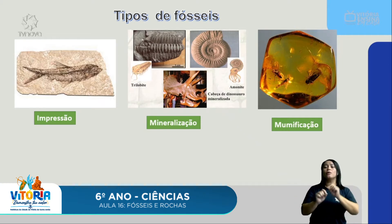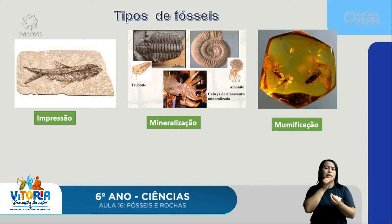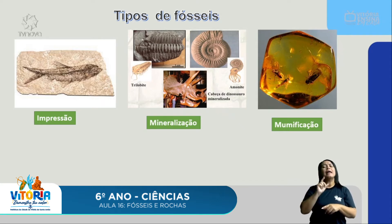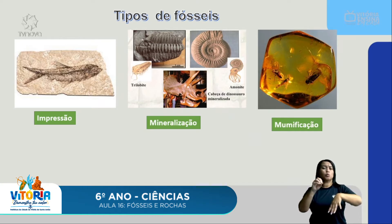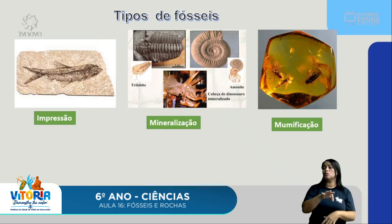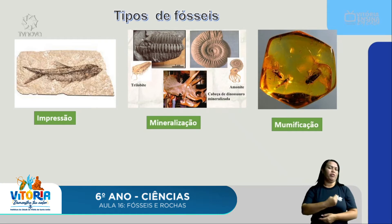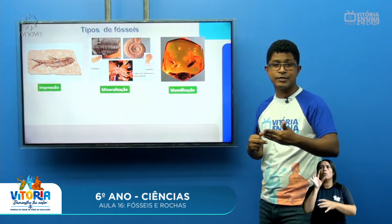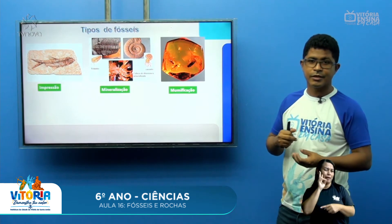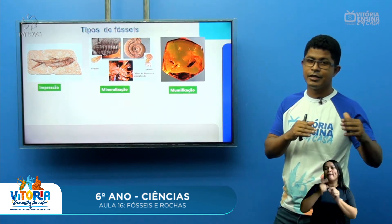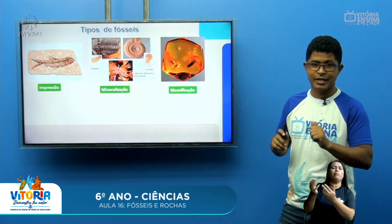Outra forma de fossilização é a fossilização por mumificação, que pode acontecer pelo frio, pela criopreservação, ou também pelo âmbar, que é uma resina vegetal que recobre insetos. Os insetos duram milhões de anos e ficam mumificados, mantendo sua forma original. Porém, um animal mumificado em âmbar não pode gerar um novo ser vivo — você não vai poder criar novos dinossauros como acontece no filme Parque dos Dinossauros. Aquilo é só ficção, mas o filme não deixa de ser legal por conta disso.